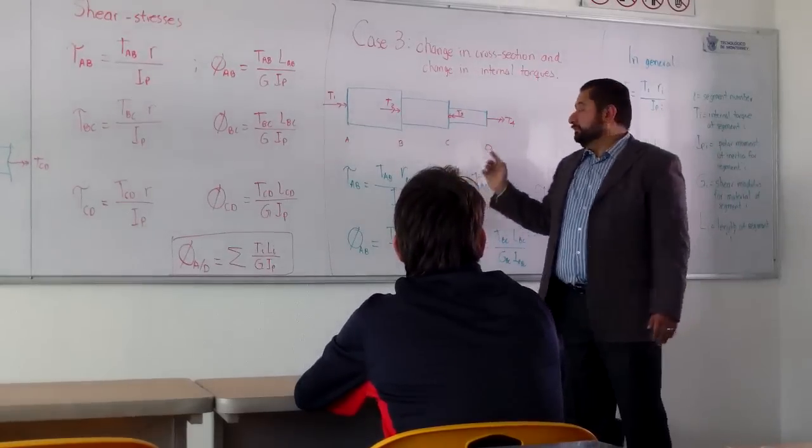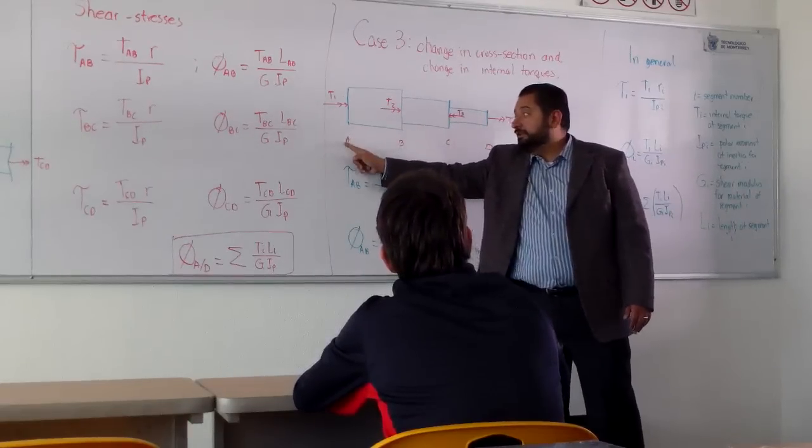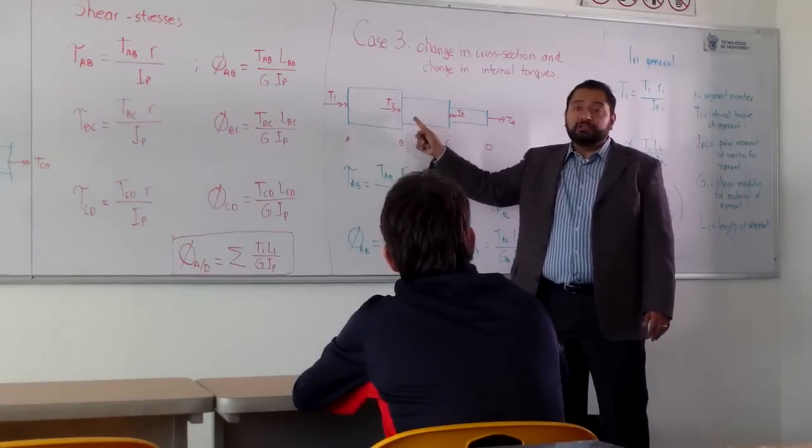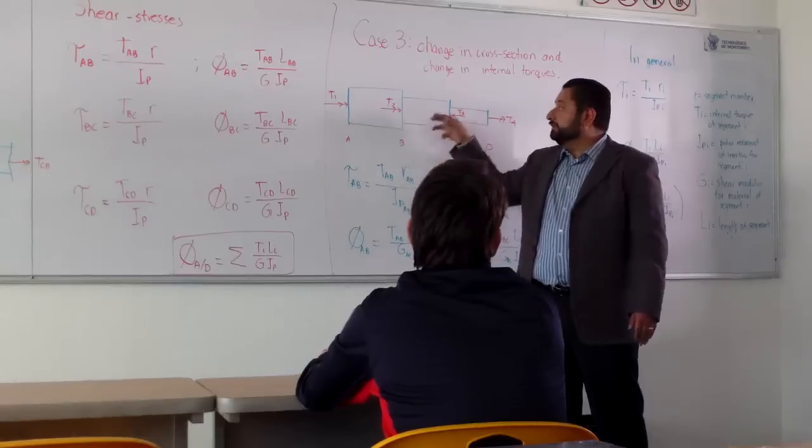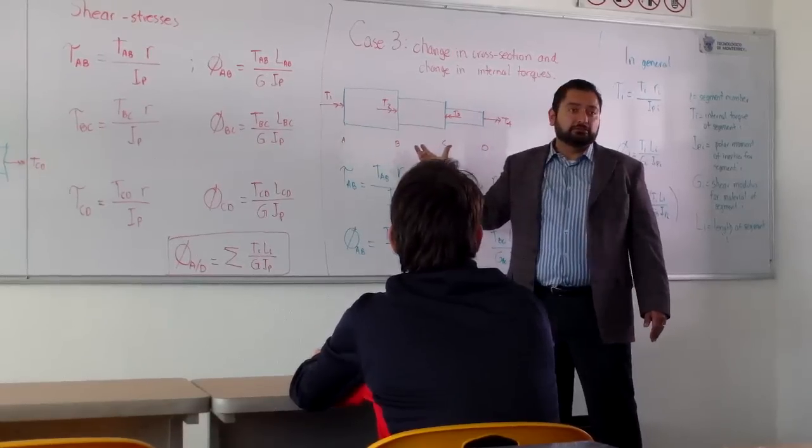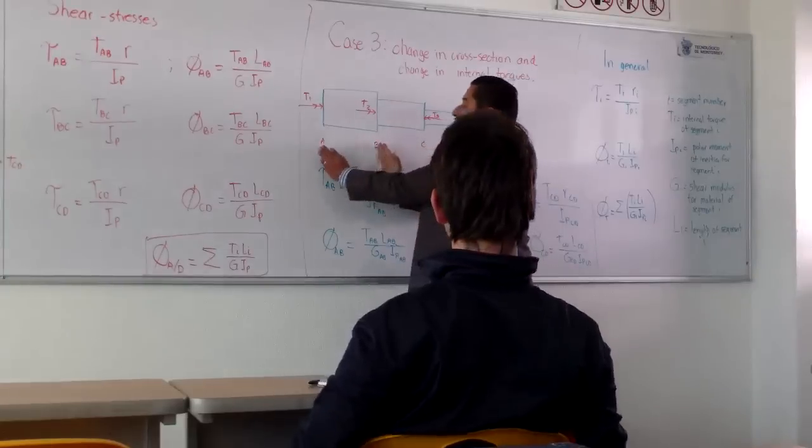Another mistake. When you evaluate BC, you are not going to put, I repeat, the length from A to C. It's just the length from B to C. That is, the length in which the internal torque BC is acting on it. Not a cumulative length. It's just the length of each segment.